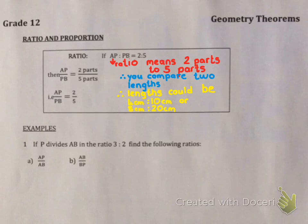So it doesn't mean the lengths have to be 2cm to 5cm, they could be. But the lengths could be 4cm to 10cm or 8cm to 20cm. Both of those simplify to every 2cm that AP has, PB has 5cm.